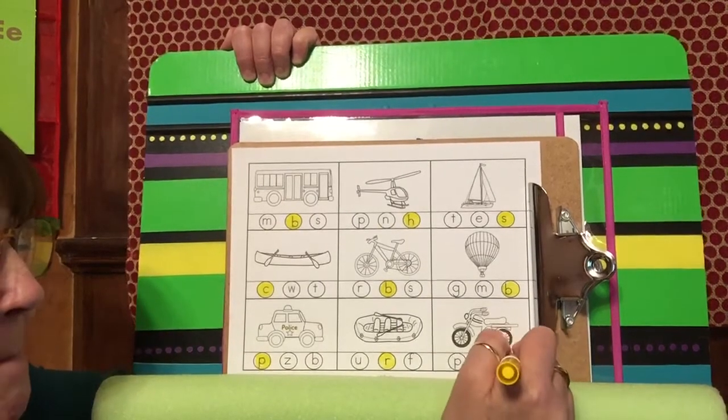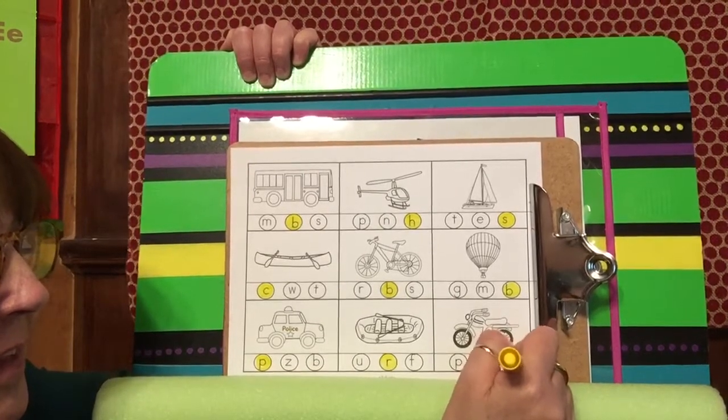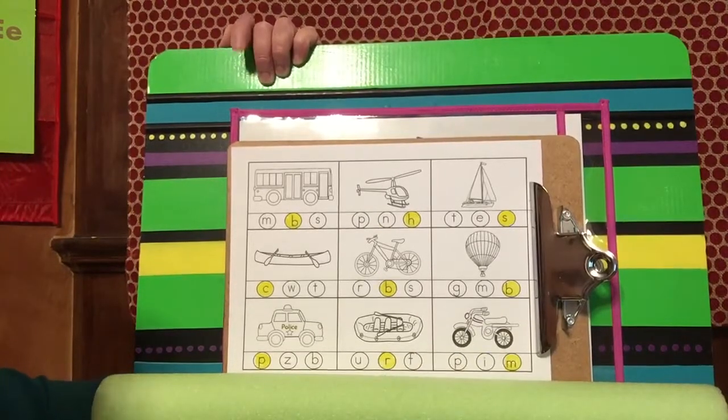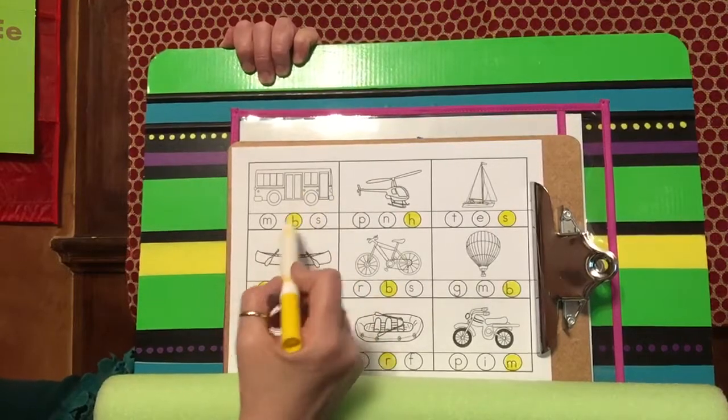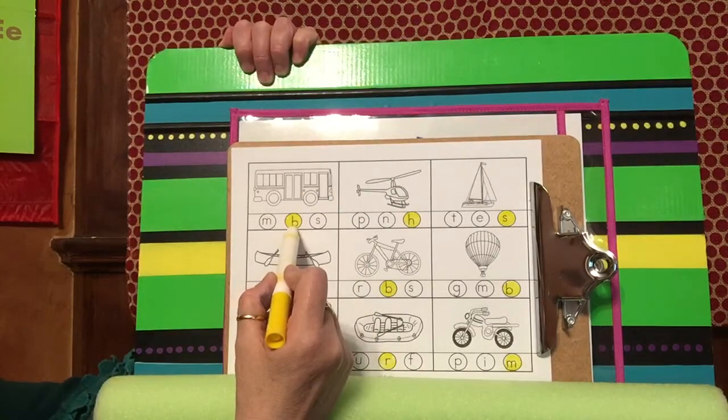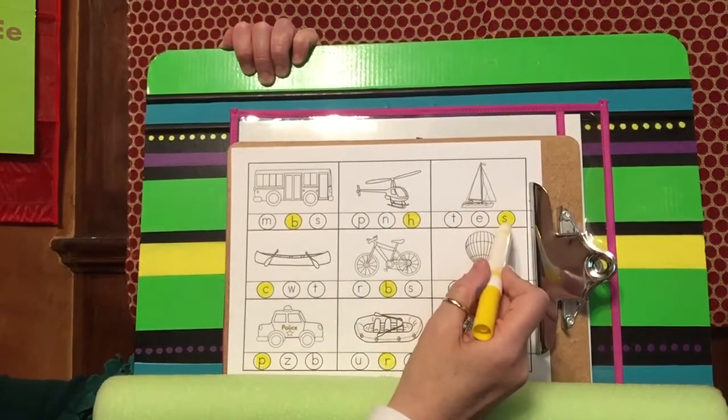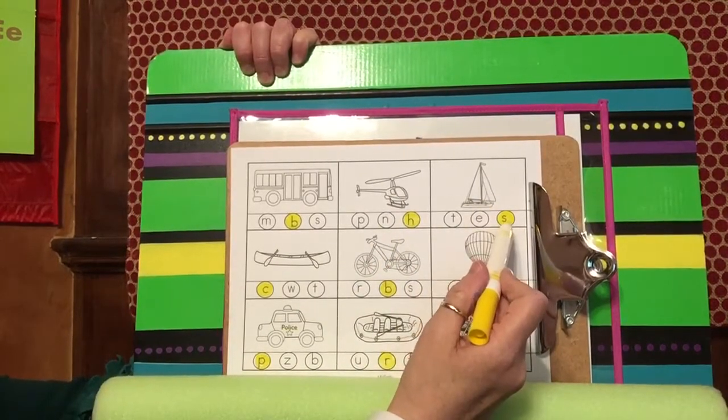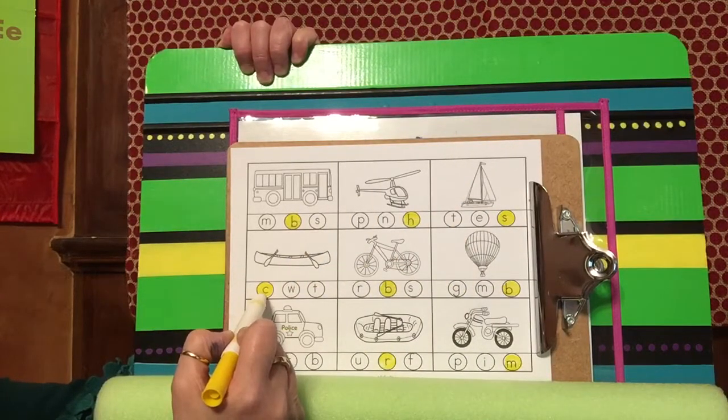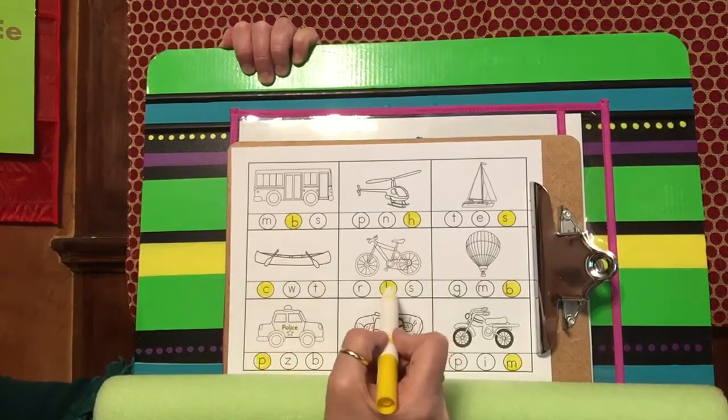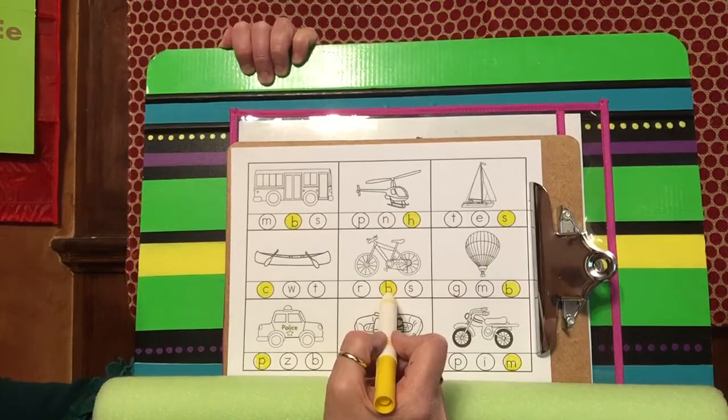Look at there, I think we got them all. Let's go over our sounds for the letters that we found. B says buh, H says h, S for sailboat says sss, C says k for canoe, bicycle starts with buh buh B.